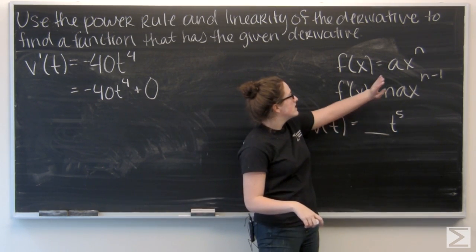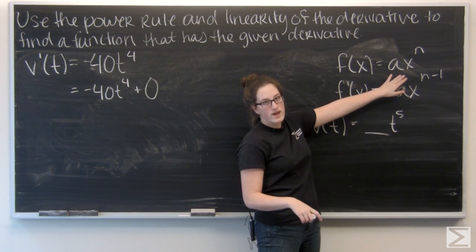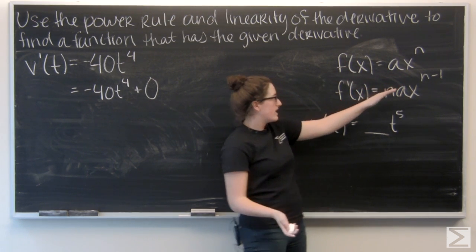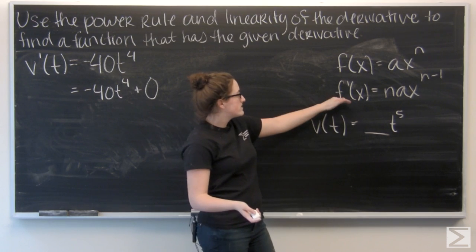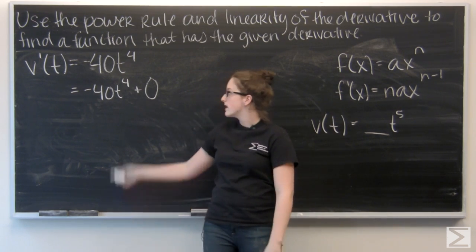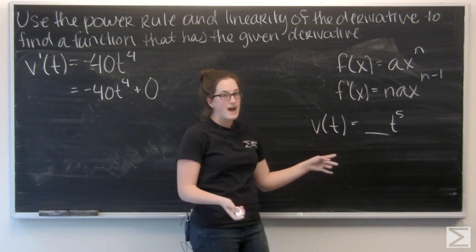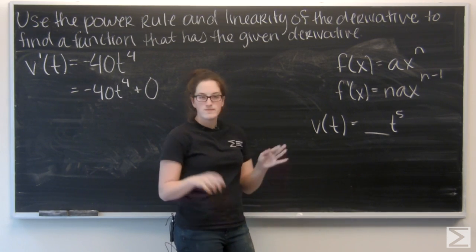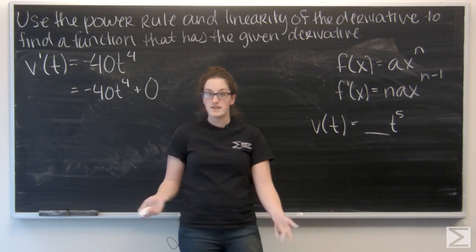So what if n is zero here? So I have just f of x equals a. That derivative is going to be zero. So if I have a plus zero here, I need to add some constant over here. We don't really have a way of telling what it is, so I'm just going to call it c.